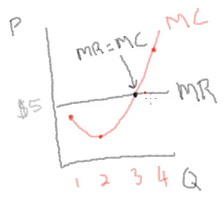And so what you're essentially trying to figure out with this graph is how many units should you produce? When should you stop?